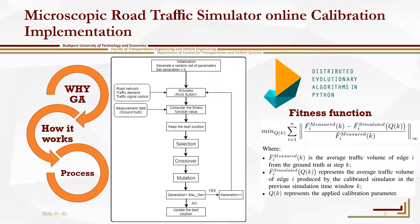Traffic simulator calibration can be seen as an optimization problem with a huge search space and often a highly nonlinear and complex one. Such kind of optimization problem usually does not have gradient information to assist the search. Therefore, a computer-based method such as a genetic algorithm was applied.